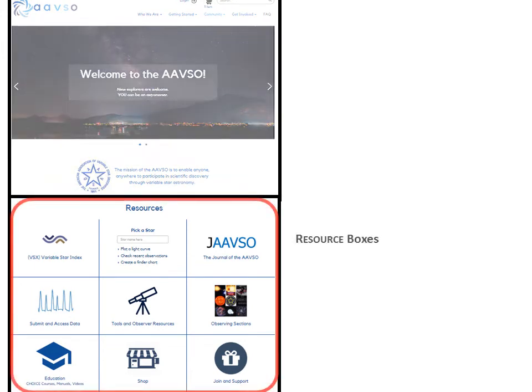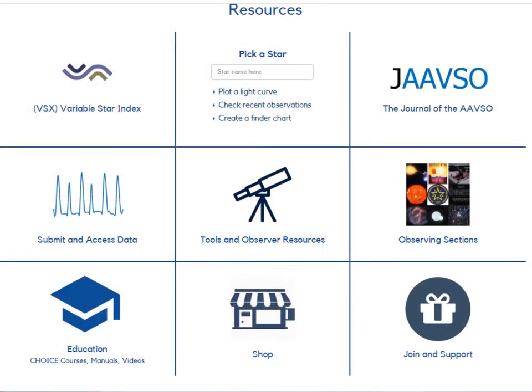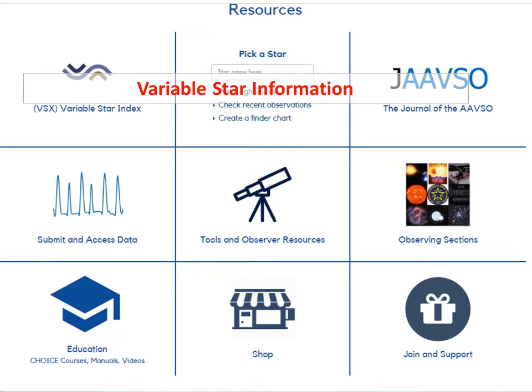The resource boxes are located in the middle of the home page and they link to things that are primarily of use to researchers and observers. Here are the nine resource boxes. The top row links to variable star information, the AAVSO's variable star index, our Pick a Star app, and the Journal of the AAVSO.